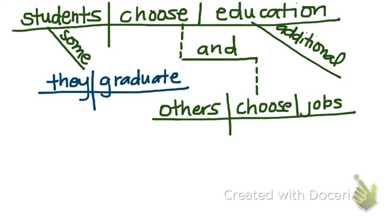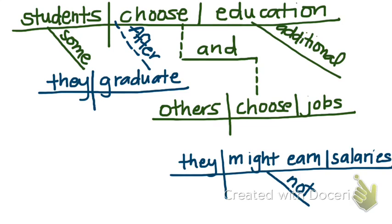Here is the first dependent clause. Next, we will connect it to the independent clause that it's part of by going verb to verb with the subordinating conjunction 'after.' Notice that it's capitalized because it's the first word in the sentence. Next, we need to diagram our second and final dependent clause. Finally, we will add the subordinating conjunction 'although,' connected verb to verb. Notice that it's on a dotted line, and that completes this compound-complex sentence.